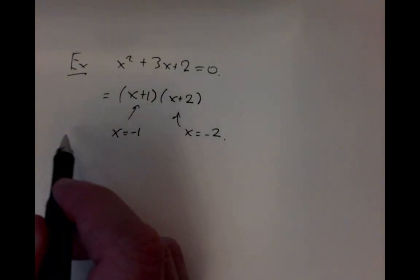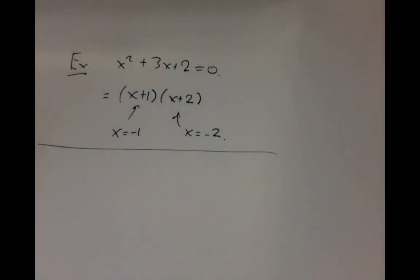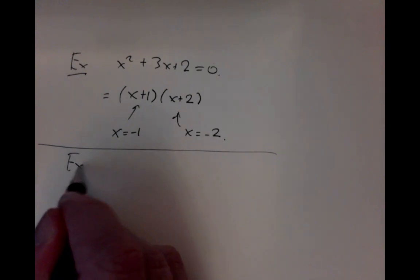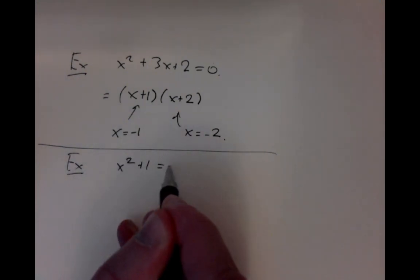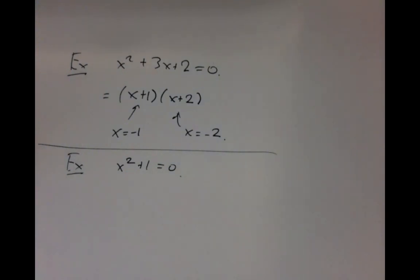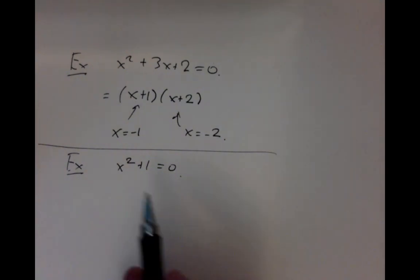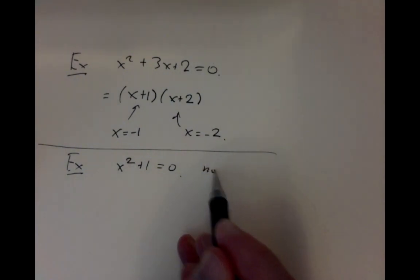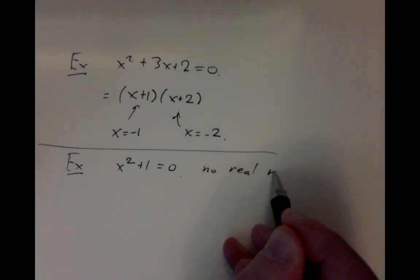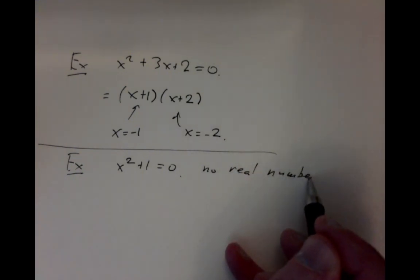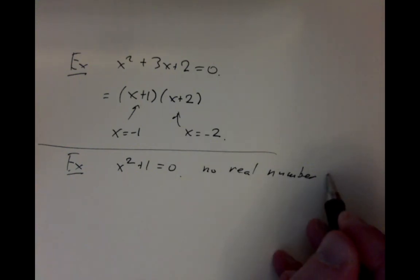But sometimes you have worse examples — some examples don't seem to have any roots. If we look at x squared plus 1 equals 0, that's going to be our main example of a polynomial that doesn't seem to want to have any roots. Why doesn't it have any real number roots? Real number meaning an ordinary number in the sense of mathematics.